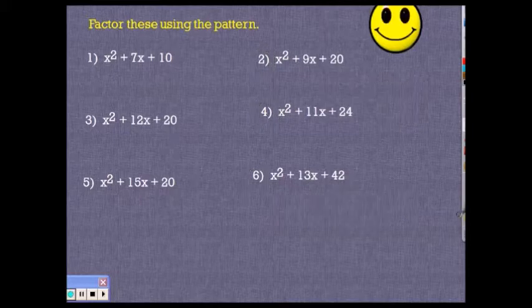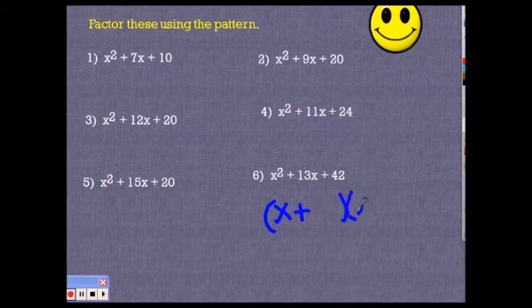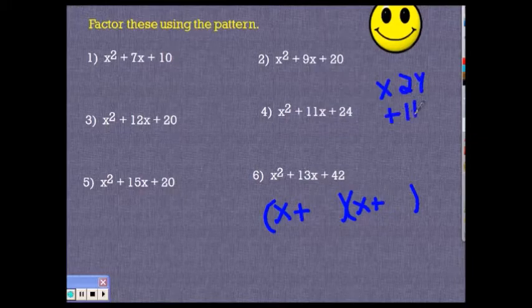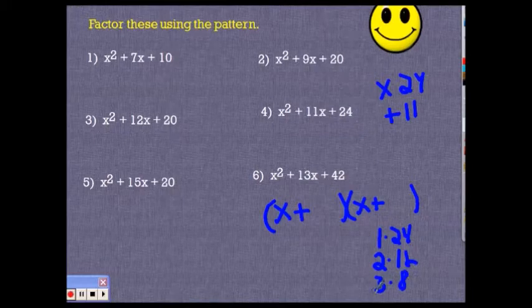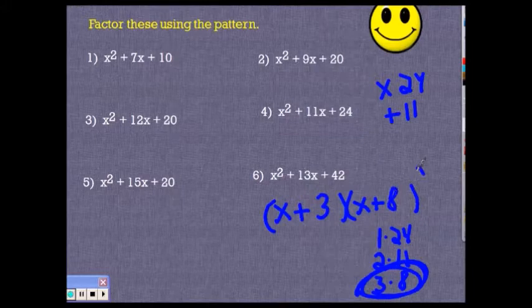For number 4, I'm looking for two numbers that multiply to 24 and add up to 11. Suppose those don't just pop into my head: 1×24 — doesn't add to 11; 2×12 — no; after 2 comes 3. 3×8 is 24, and 3 plus 8 adds up to 11. That's my winner. So my answer is (f+3)(f+8) — either order, it doesn't matter.